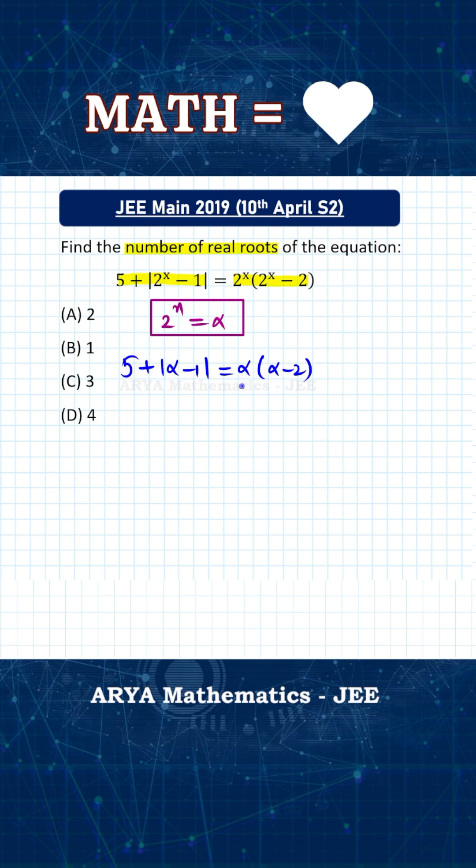And now as you can see that this right hand side is a quadratic expression. So it will be a parabola. And on left hand side, we have a modulus function and we have linear expression inside that. So it will represent two straight lines.